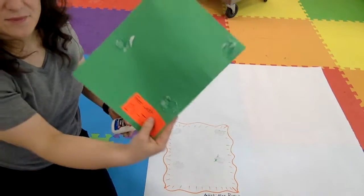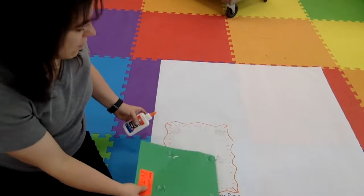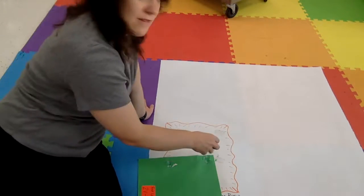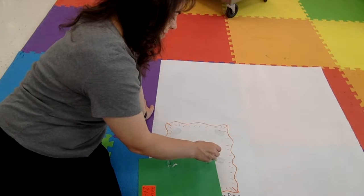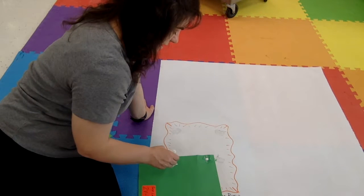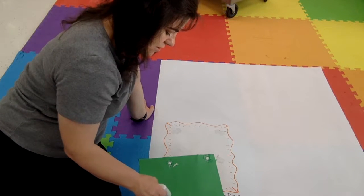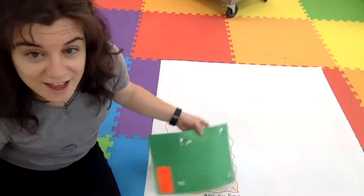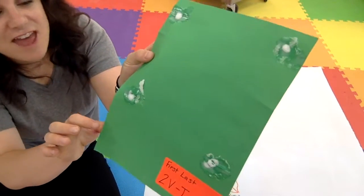You are then going to take your art and you are going to put four dots of glue, and the dots are going to be the size of a dime. How many dots do I do? Four. What size are they? The size of a dime.